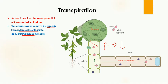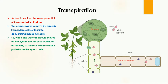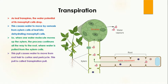When the cells in the leaf have low water potential, water from the xylem cells moves into those cells to maintain the water potential. When one water molecule moves up the xylem, the process continues all the way to the root where water is pulled from the xylem cells. This creates space in the xylem, and the next water molecule fills that space, causing a continuous movement of water from the xylem cells toward the leaf to make up the water potential. This movement creates a pull.